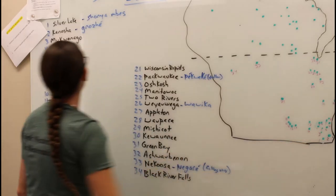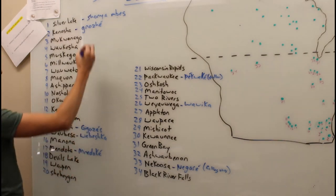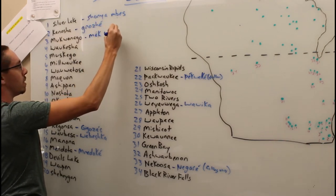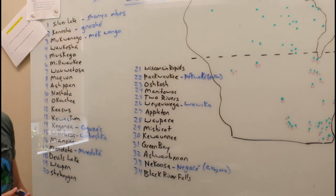Number three, we have Mukwonago, Wisconsin. It comes from our word Makwanago, and that means a beaver den.